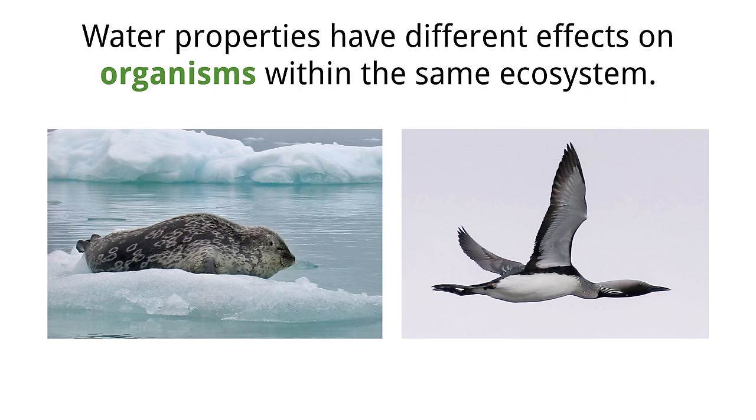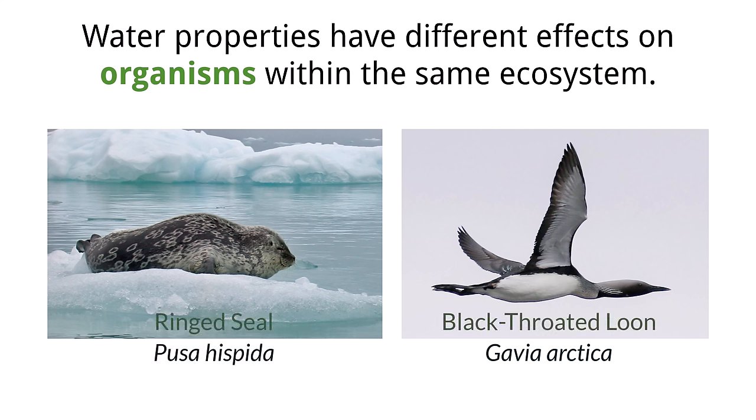For the IB exam, there are two specific organisms that you need to know and be able to compare in terms of how these physical properties of water impact them. They are Gavia arctica, common name black-throated loon, and Pusa hispida, common name ringed seal. The seal is a mammal and the loon is a bird, and both of these organisms spend varying amounts of time interacting with the land and water in the same ecosystem.